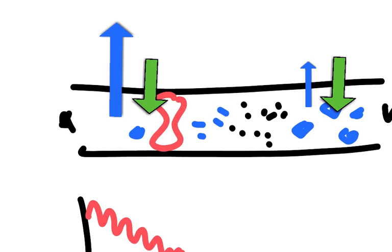Tissue fluid is literally just plasma minus the plasma protein. The plasma proteins stay in the capillary, whereas the fluid goes into the tissues and bathes the tissues. So when it's in the capillary it's called plasma; when it's squeezed out into the tissues it's called tissue fluid. That tissue fluid is plasma minus the plasma proteins which have stayed in the capillary bed.